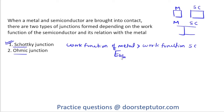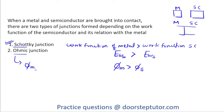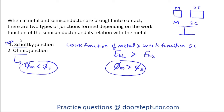The condition to form a Schottky Junction is that the work function of the metal, denoted EWM, should be greater than the work function of the semiconductor material, denoted EWS. We can also represent it by PhiM. In the case of an Ohmic Junction, the work function of the metal is smaller than that of the semiconductor. So whenever the work function of metal is greater than that of the semiconductor, a Schottky Junction is formed; when it is less, an Ohmic Junction is formed.